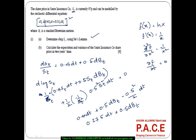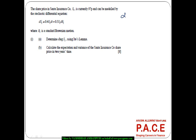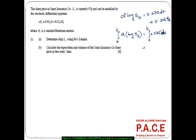This is the result: D log ST = 0.275 DT + 0.5 DBT. Now I will take the integral on both sides from 0 to T. The integral from 0 to T of D log SS equals the integral from 0 to T of (0.275 DS + 0.5 DBs).